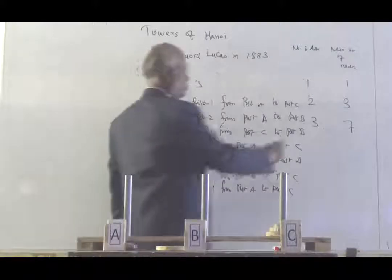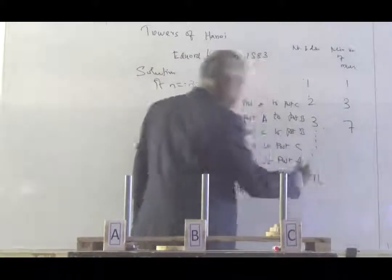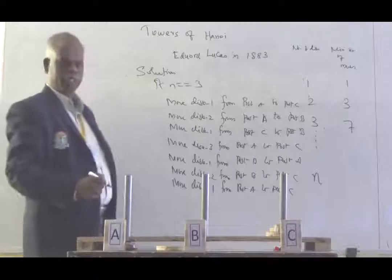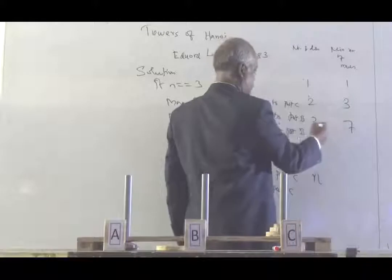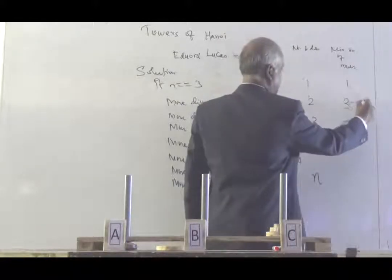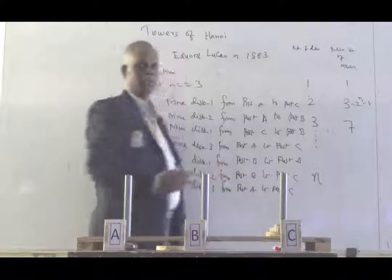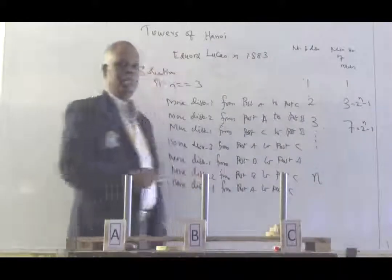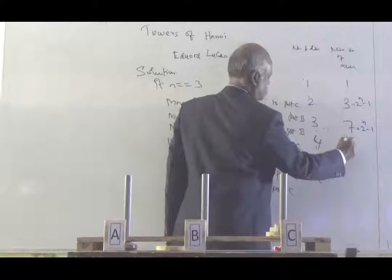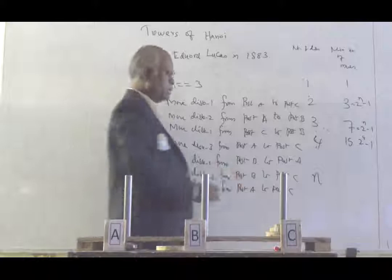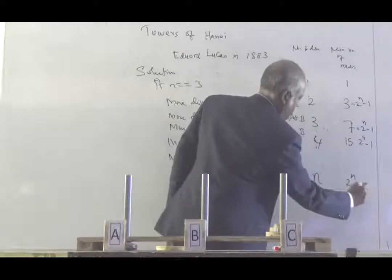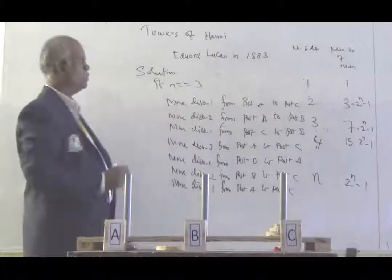From this we can find the number of steps for N discs. If there is 1 disc: 1 move; 2 discs: 3 moves; 3 discs: 7 moves. This can be represented as 2 to the power of n minus 1. For 4 discs that is 2 to the power of 4 minus 1, which equals 15. So for N discs the minimum number of moves is 2 to the power of n minus 1.